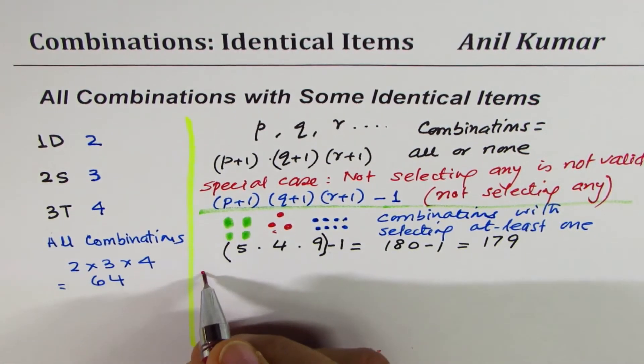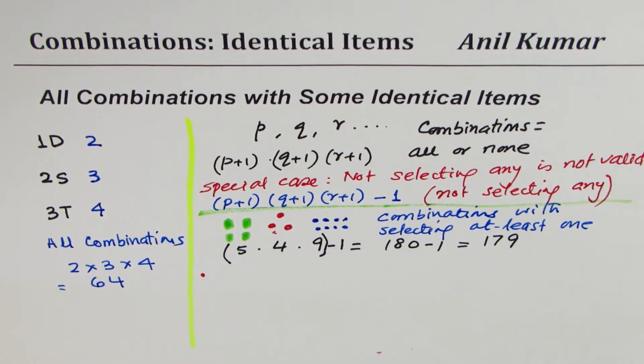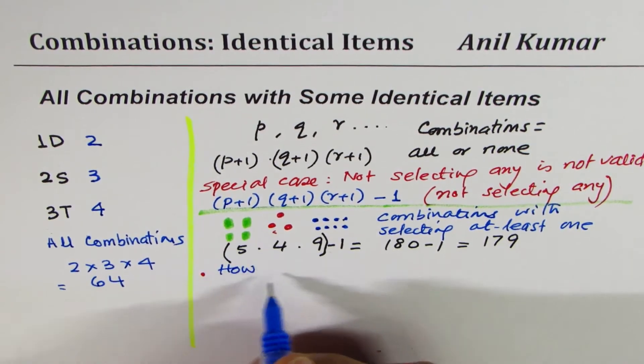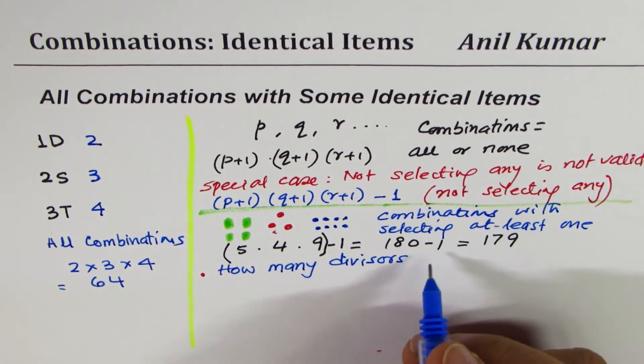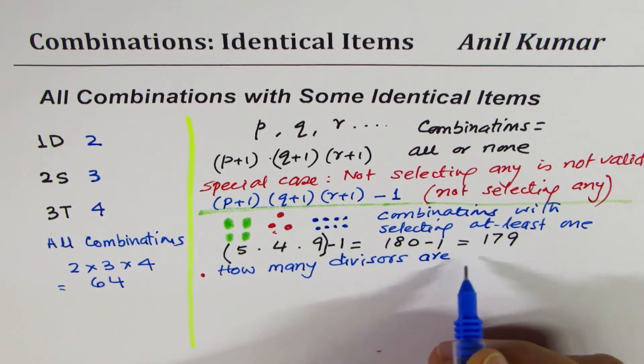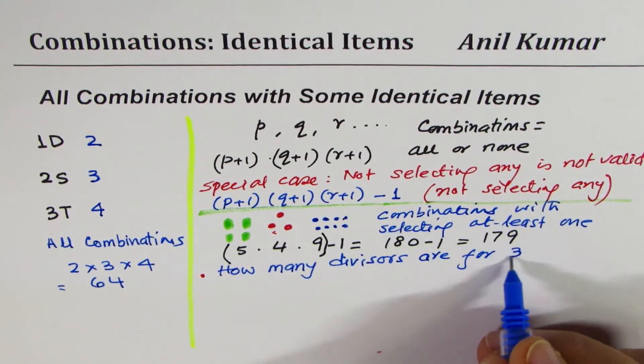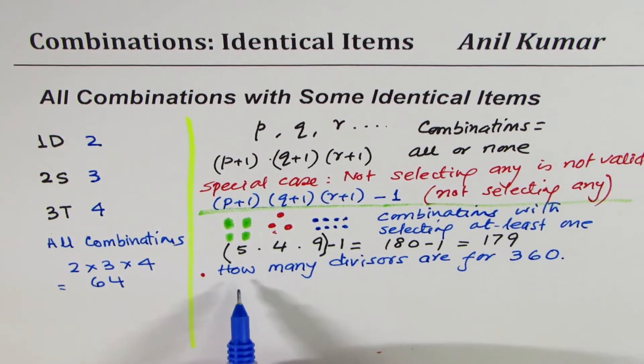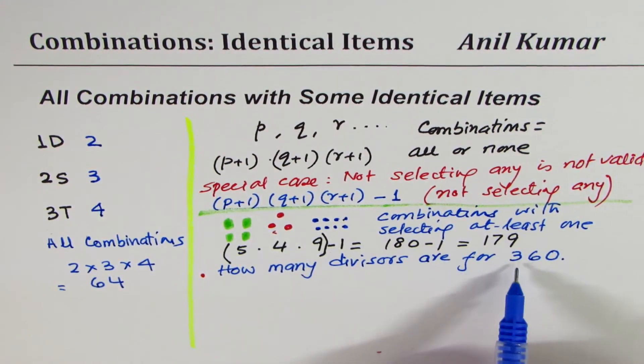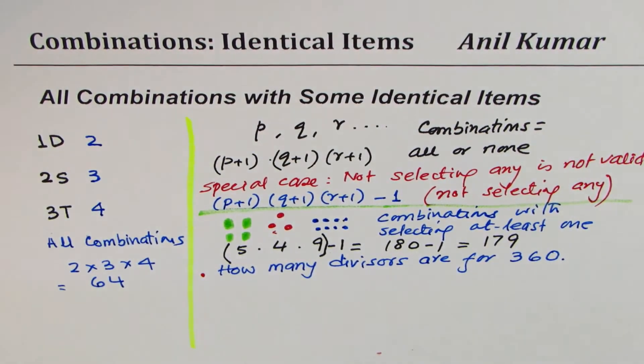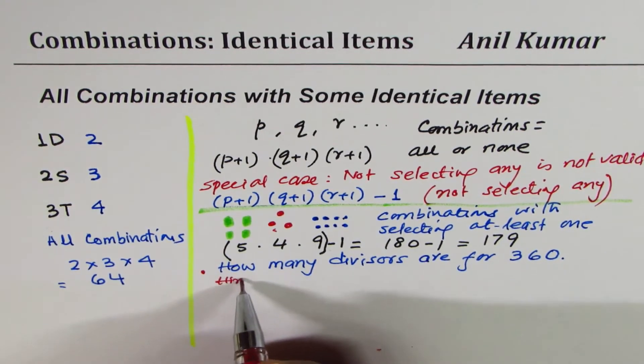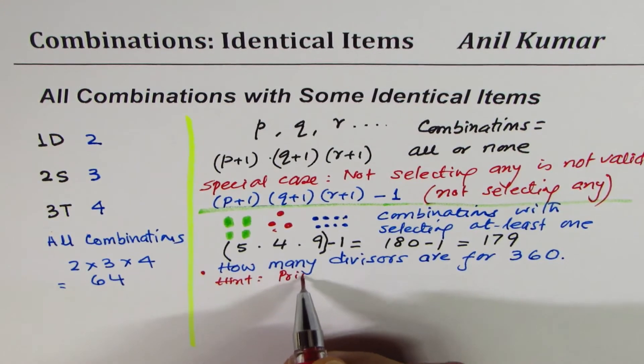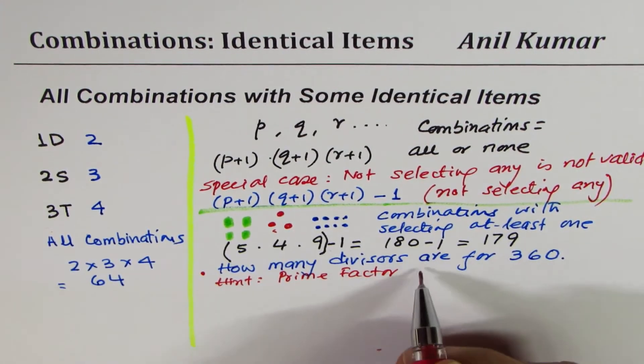Now here is a test question for you which is very interesting. The question here is how many divisors are for the number three hundred and sixty. This is a very interesting question. Let me give you a hint here: you have to do prime factorization to get the answer.